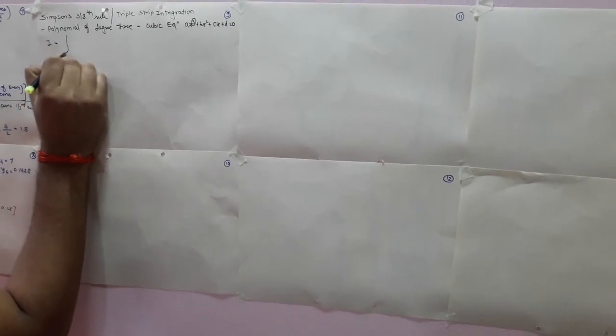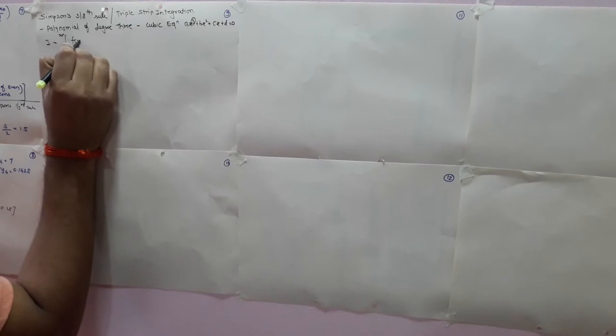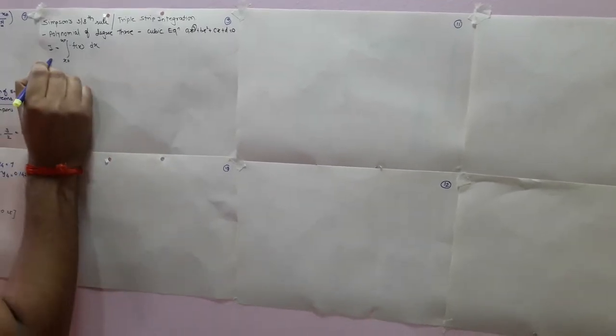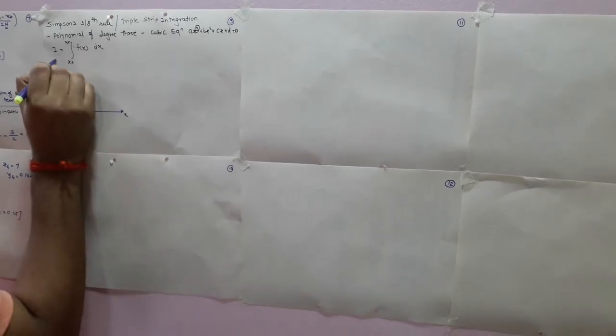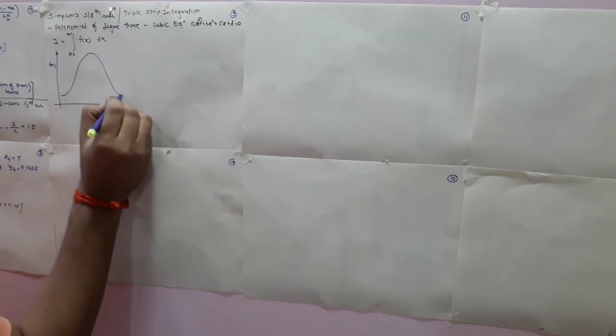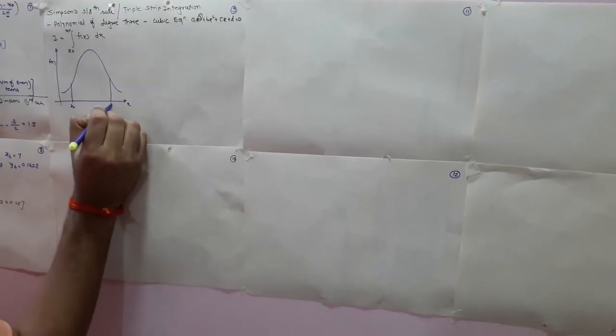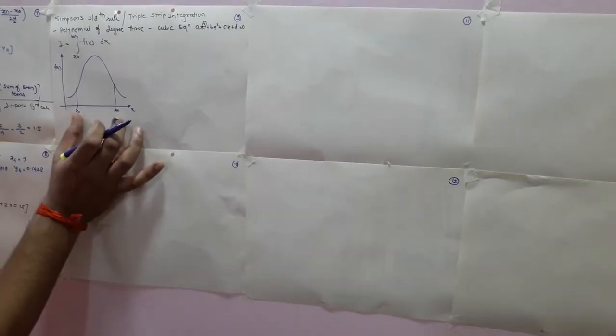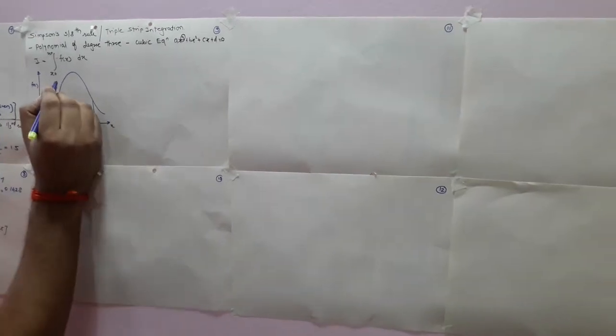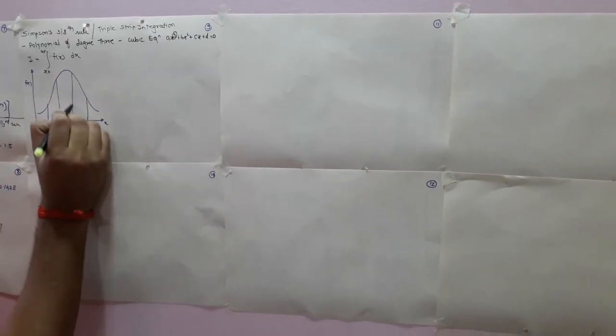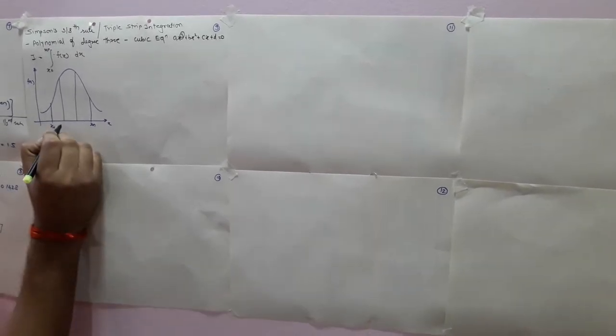Compare this to Simpson's 1/3 rule, where every major strip is divided into 2 sub-strips. Here in Simpson's 3/8 rule, every major strip is divided into 3 sub-strips. If I want to integrate with limits from x₀ to xₙ, f(x) dx, suppose I have a curve x versus f(x) with limits from x₀ to xₙ — that is one major strip divided into three sub-strips.